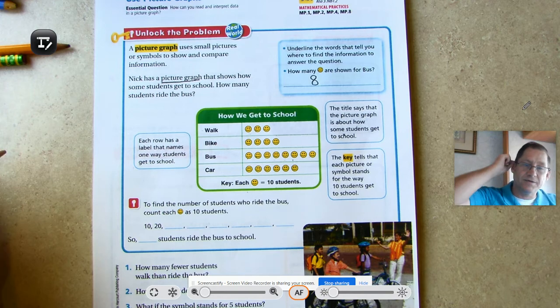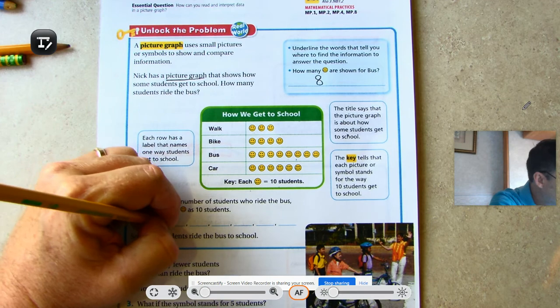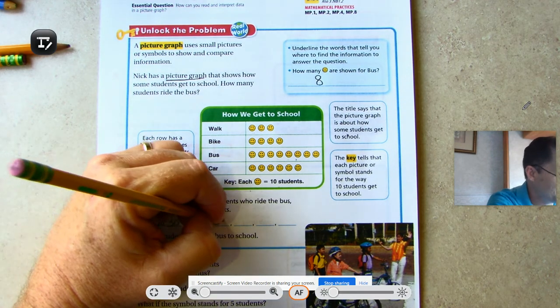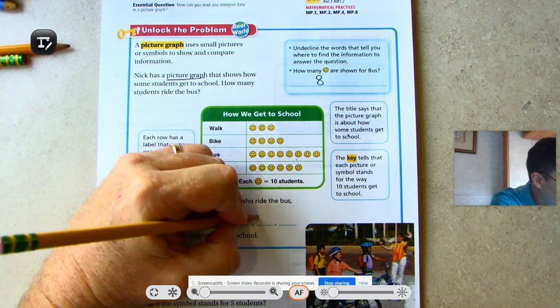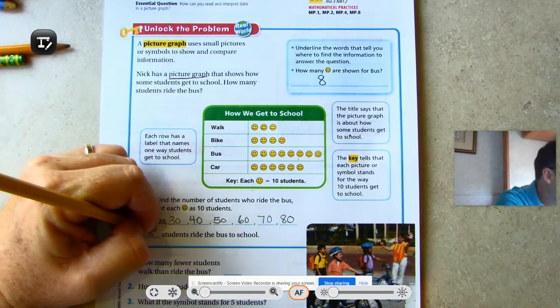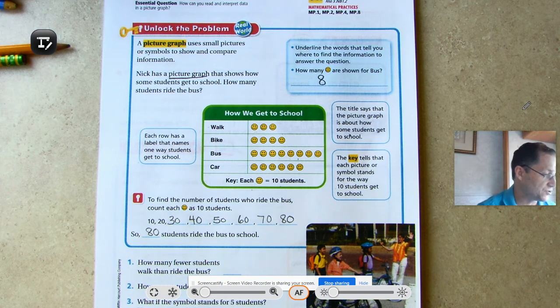To find the number of students who ride the bus, count each happy face as 10 students: 10, 20, 30, and we just keep going until we've counted eight of them. So 80 students ride the bus to school.